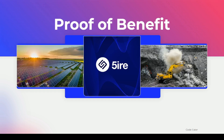Let us understand Proof of Benefit with an example. Say we have two companies — one using solar energy to generate electricity, and another using coal. Comparing these two, the solar energy company is much better environmentally than the coal company, which uses a non-renewable resource. In Fire Technology, the solar energy company will be rewarded because they are adopting sustainable practices.